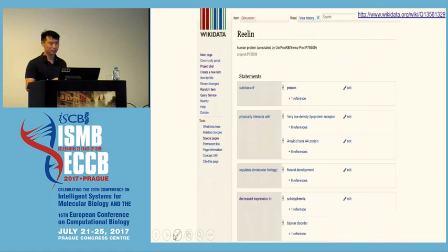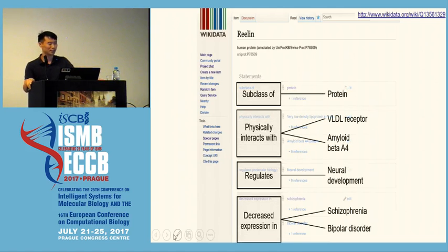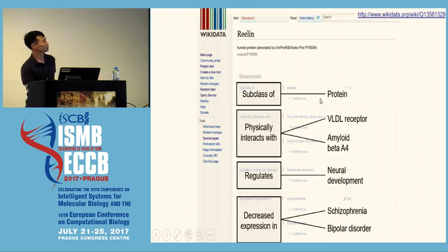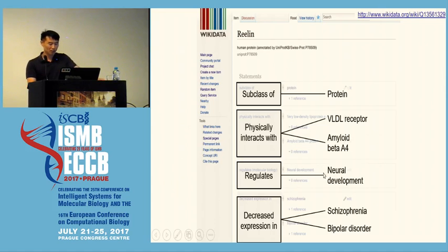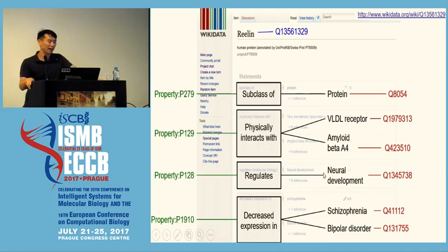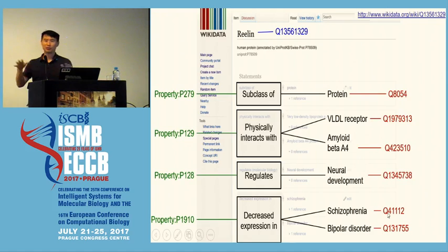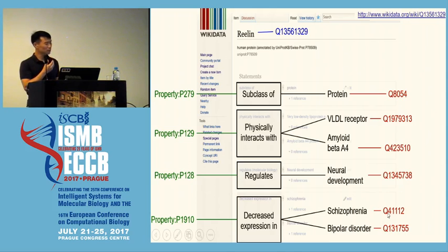Let's revisit the page for the protein relin in Wikidata. Everything on this page boils down to a triple where the subject is relin, and here are the predicates and objects: relin is a subclass of protein; relin physically interacts with two other proteins; relin regulates neural development; and relin has decreased expression in two diseases. These triples aren't just free text — they're related back to stable identifiers. These QIDs are Wikidata IDs, and through similar statements they connect to identifiers from NCBI, Ensembl, UniProt, MGI, and so forth.